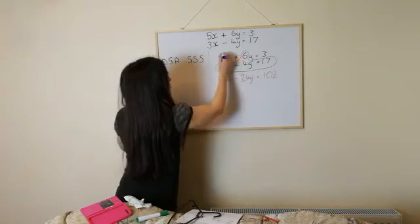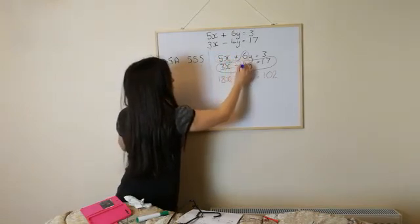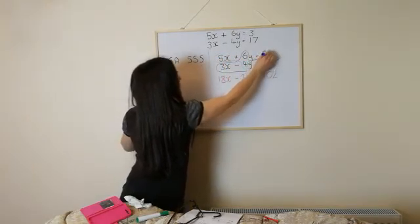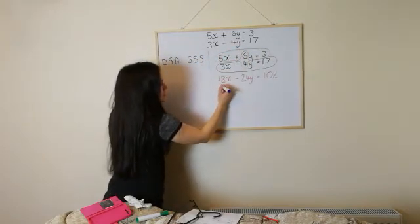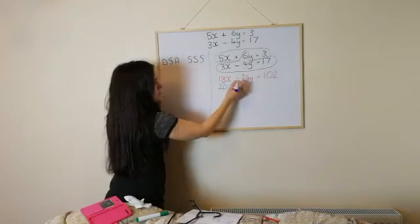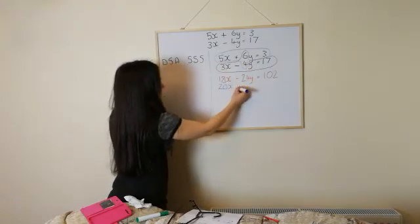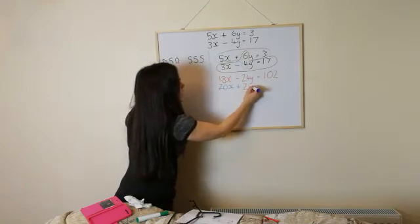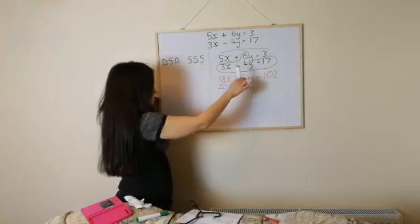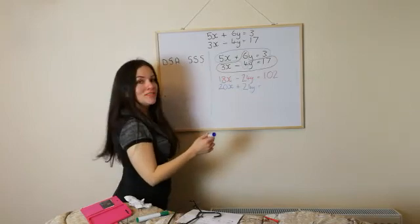I'll do another upside down coat hanger. So it's all this here by the number 4. So 4 times 5x gives me 20x plus 4 times 6y is 24y. And 4 times 3 is 12.